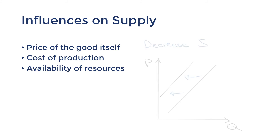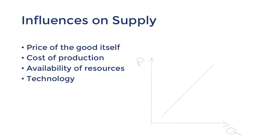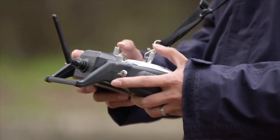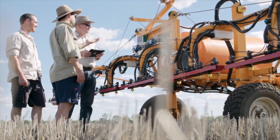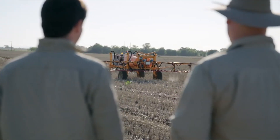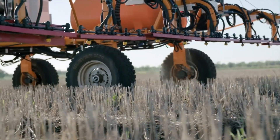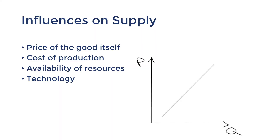Also related to cost of production is the state of technology. Technological advancements can make production more efficient, lowering the cost of production, which leads to an increase in supply. For example, the farming industry has implemented technology that's made it more efficient to monitor and harvest crops. This means farmers can produce larger quantities or reduce prices — a shift of the supply curve to the right.